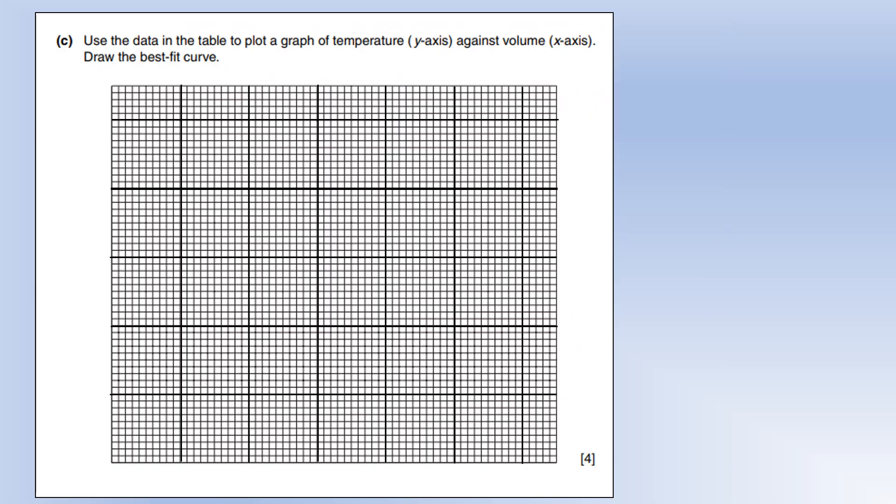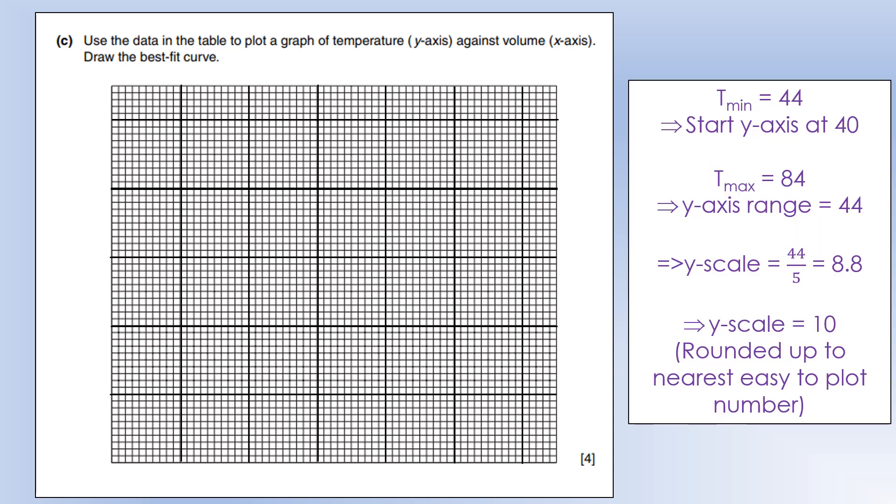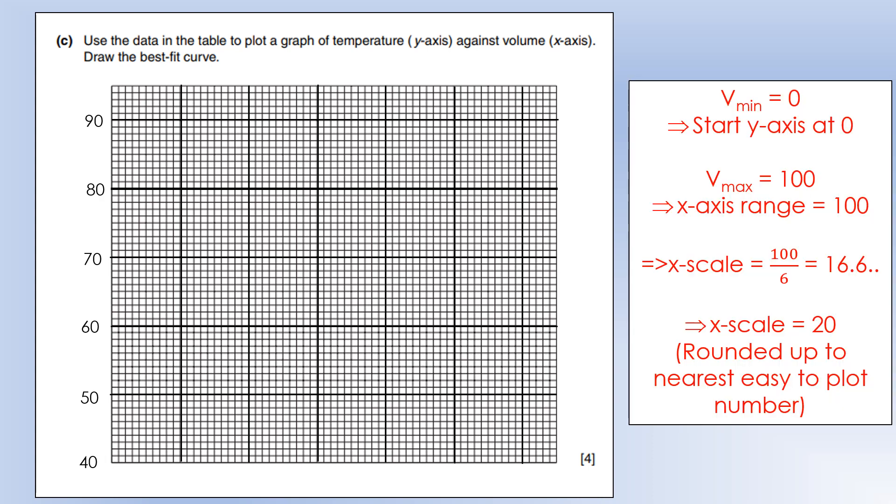We can plot a graph. What a lot of people are going to do wrong here is they're going to start the y-axis from 0, which doesn't make sense because our smallest temperature is in the 40s. My minimum temperature was 44, so I'm going to start my y-axis at 40. The maximum temperature was 84, so we need to plot a total range of 44 on the y-axis, and that gives me a y-scale of 10.